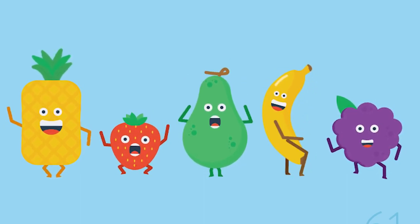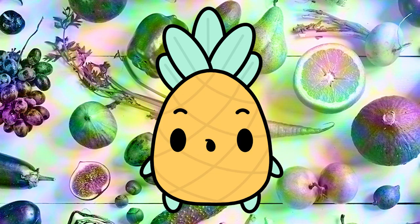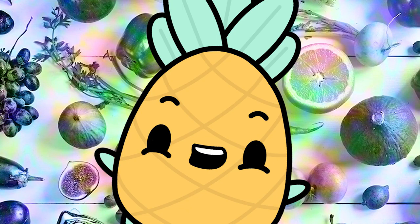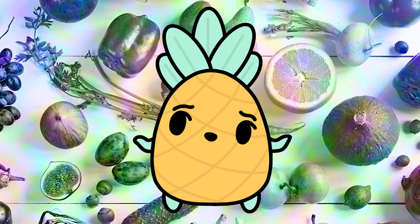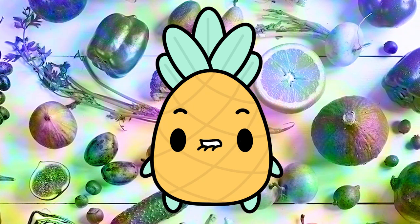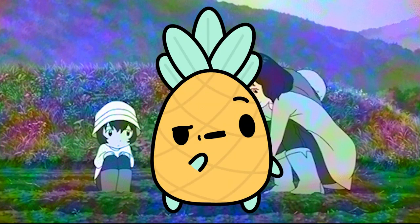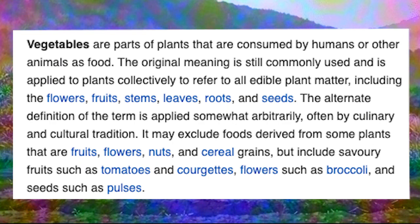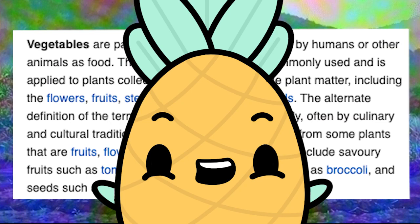For those of you still on the fruit train, if the botanical definition of a fruit is a plant with seeds, then what is the botanical definition of a vegetable? I'll wait. Dear viewers, I have some news for you — there isn't really a botanical definition of a vegetable. The term vegetable is almost always used to identify things in culinary settings as opposed to scientifically. Vegetables are parts of plants consumed by humans or other animals as food, including the flowers, fruits, stems, leaves, roots, and seeds. Vegetables can be fruits, ladies and gents.